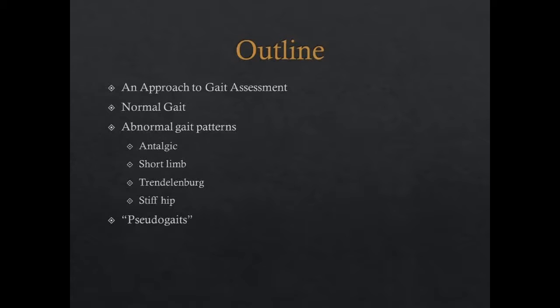We will be covering an approach to gait assessment, an analysis of normal gait, followed by common abnormal gait patterns including antalgic, short limb, Trendelenburg, and the stiff hip gait. We will then look at some pseudogaits that may be encountered.